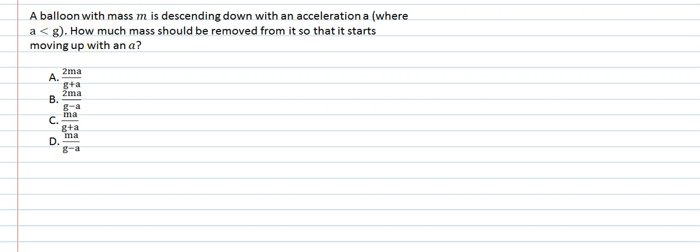Hello students, let's understand this question. A balloon with mass m is descending down with an acceleration a, where a is less than g. How much mass should be removed from it so that it starts moving up with an acceleration a?